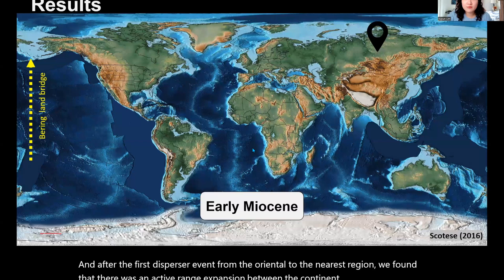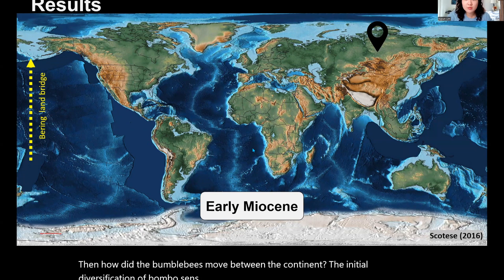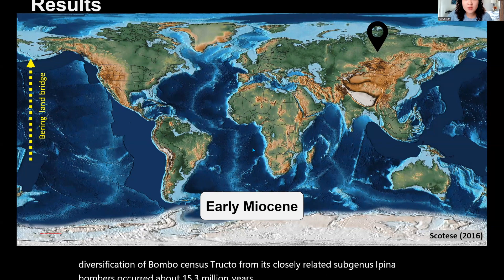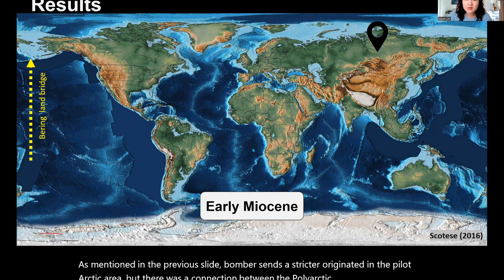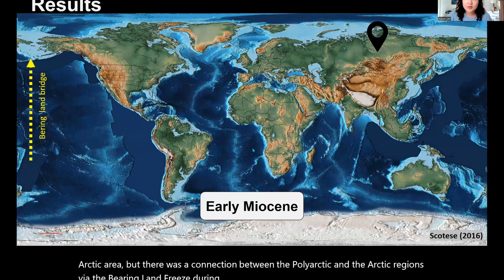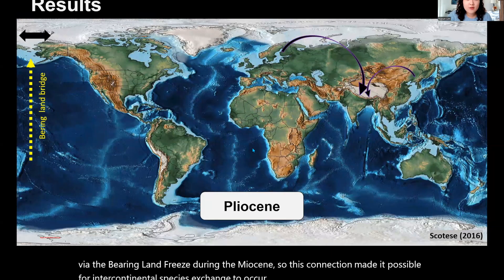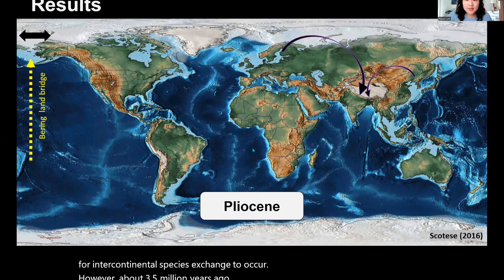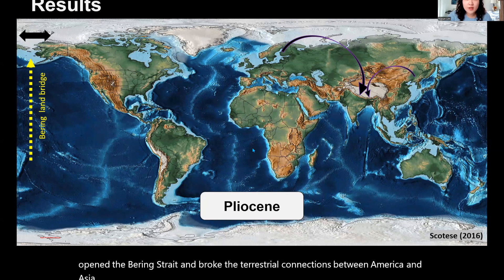How did the bumblebees move between the continents? The initial diversification of Bombus sensus stricto from its closely related subgenus Alpinobombus occurred about 15.3 million years ago, in the early Miocene. Bombus sensus stricto originated in the Palearctic area, but there was a connection between the Palearctic and the Nearctic regions via the Bering land bridge during the Miocene, making intercontinental species exchange possible. However, about 3.5 million years ago in the Pliocene, marine transgression opened the Bering Strait and broke the terrestrial connections between America and Asia. Therefore, it was impossible to move between America and Asia anymore, but it was still possible to move between the Palearctic and Oriental regions.